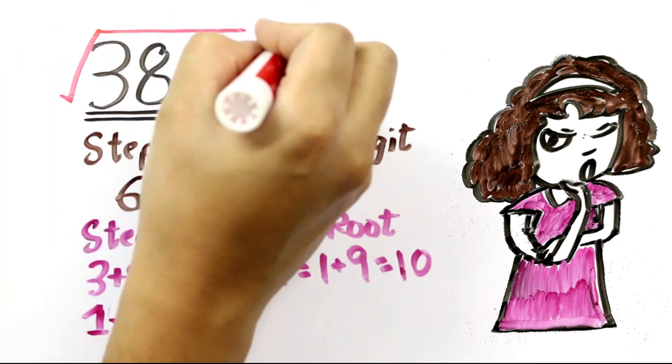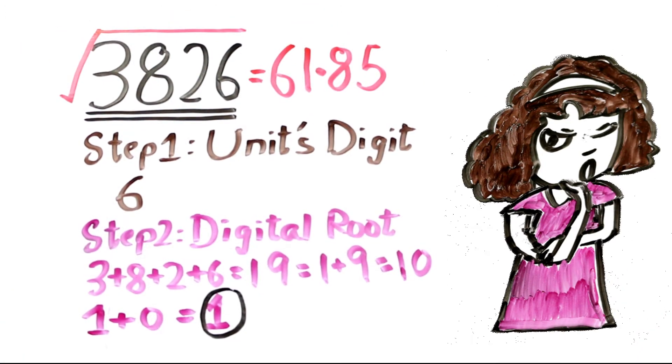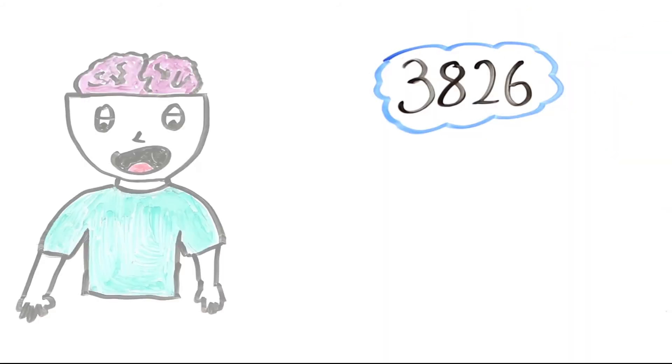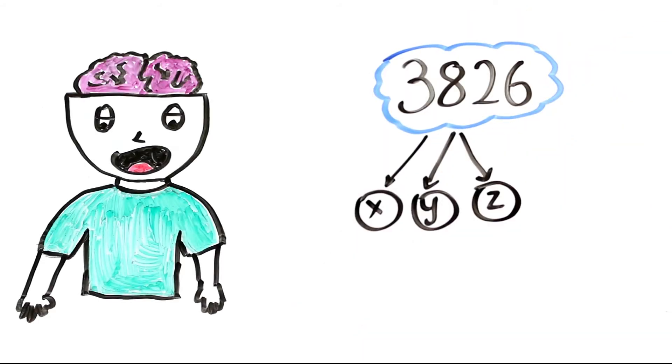But its square root is 61.85, which is a decimal number. So now that both our tests have not confirmed that this is not a perfect square, we have to go for the third and final step. Here we have to write 3826 in the form of its prime factors, and its prime factors should be raised to an even number.